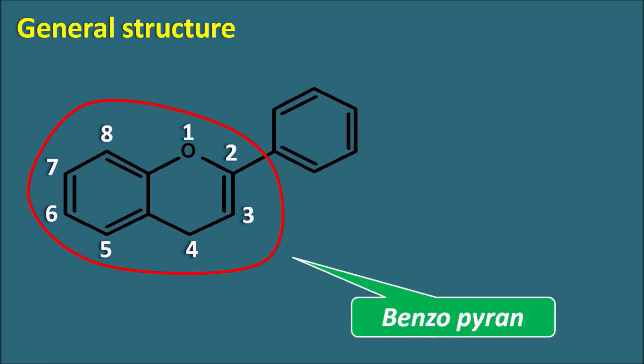At the second position we can observe a phenyl ring. We give numbering to this phenyl ring as 1', 2', 3', 4', 5' and 6'. We use prime notation to differentiate the numbering of the main ring from the side chain. This is the general structure of flavonoids, which can be modified at different positions.